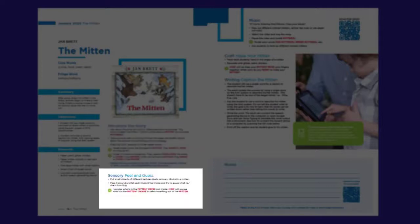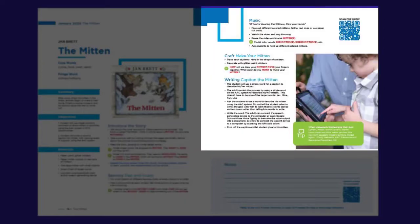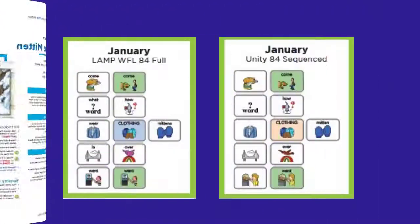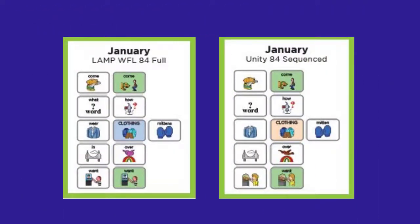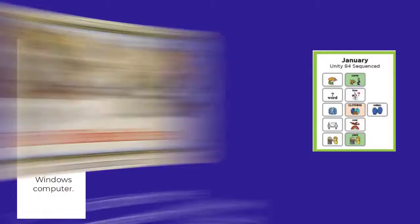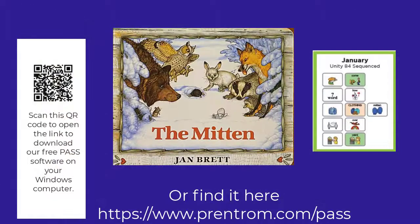You'll find additional activities for sensory, craft, motor, writing, and music. You'll also find smart charts for Lampboards for Life 84 Full and Unity 84 Sequenced. You can use these when you're reading the story. If you need a different language configuration, feel free to use our free PASS software to make your own smart charts.